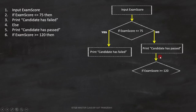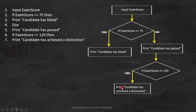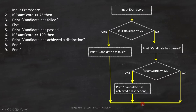This is how we place it in the flowchart. Line 7 is 'print candidate has achieved a distinction' — it is a statement, so we place it accordingly. Lines 8 and 9 are end if, meaning both conditions end here, and this is how we close the flowchart. With this, the flowchart is ready.